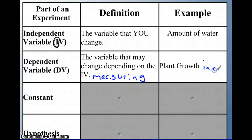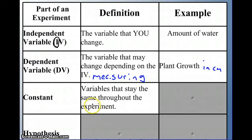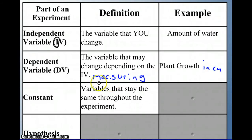In your notes, you should describe the difference between an independent and dependent variable. Now, constants are important. Constants are the variables that stay the same throughout an experiment. These are important because if multiple things are changing, you don't really know what is causing your results. So you want to change one thing at a time and keep everything else constant.